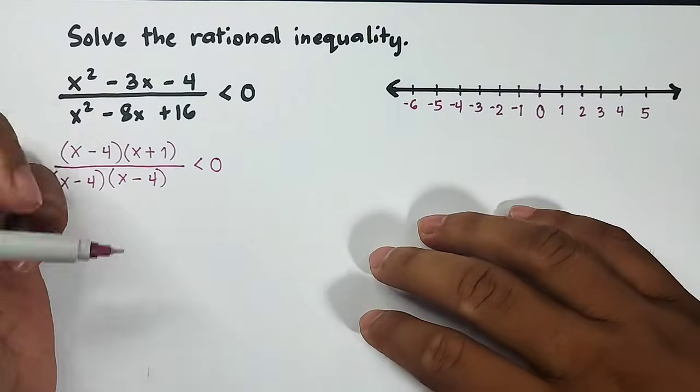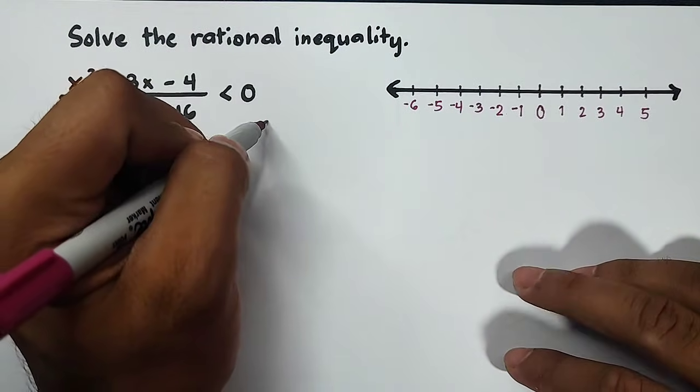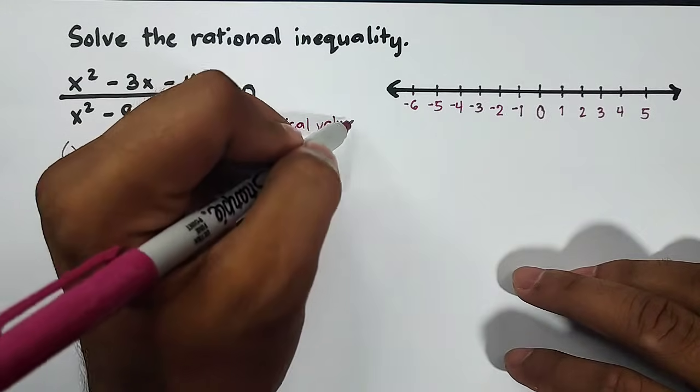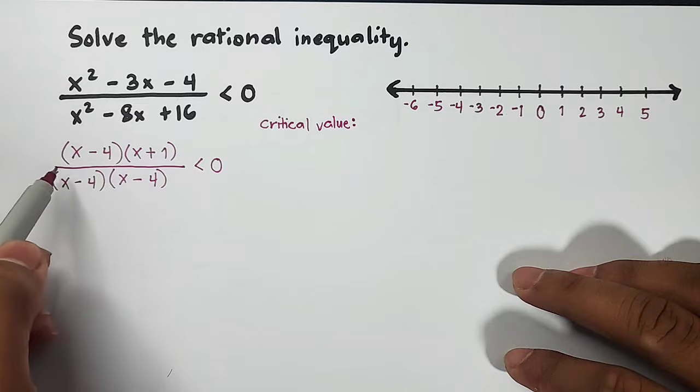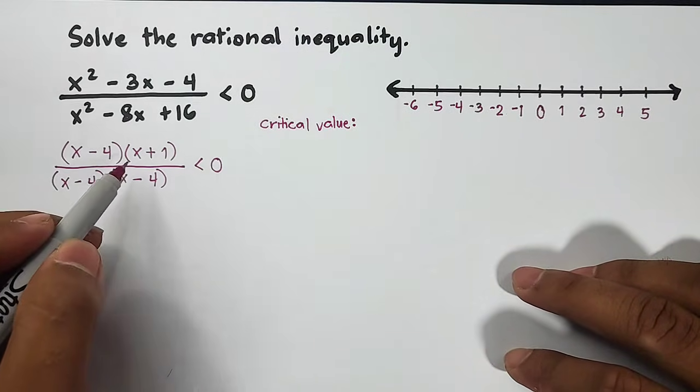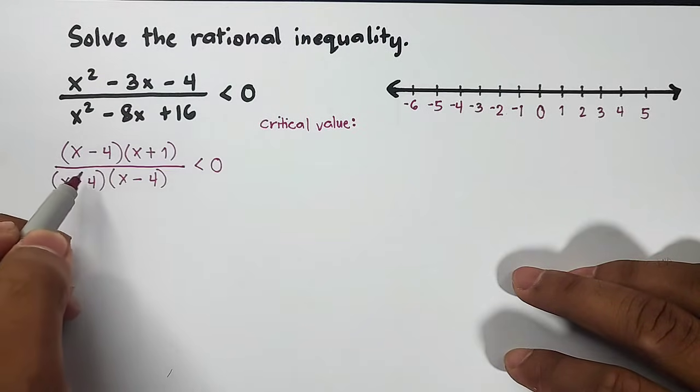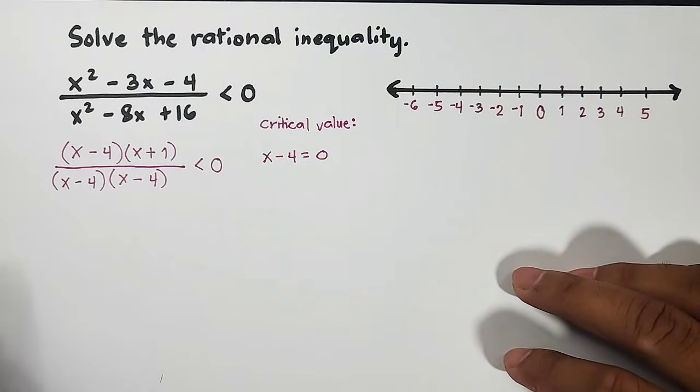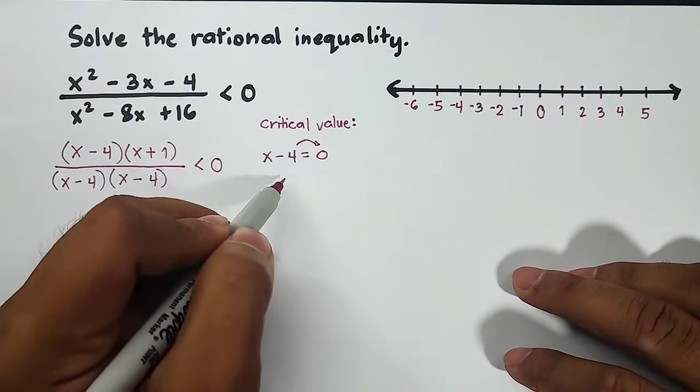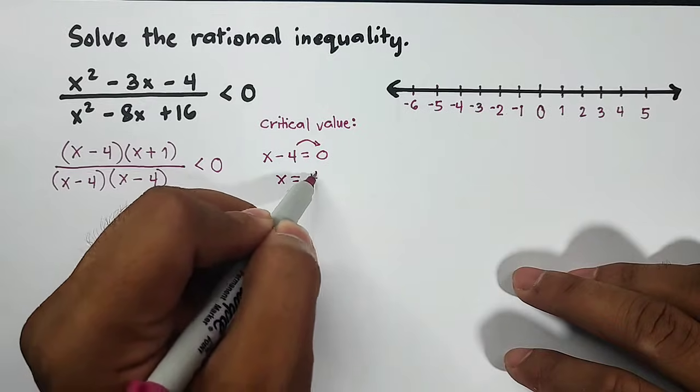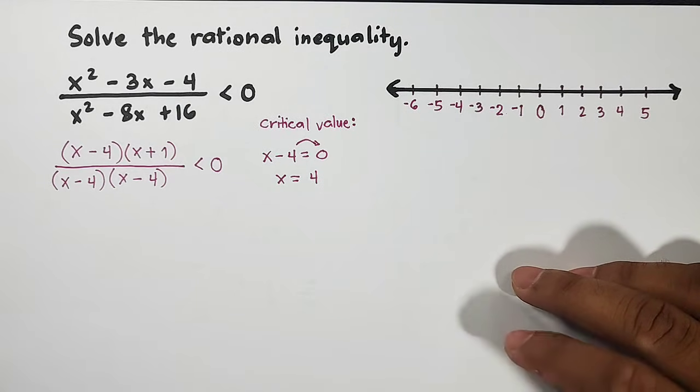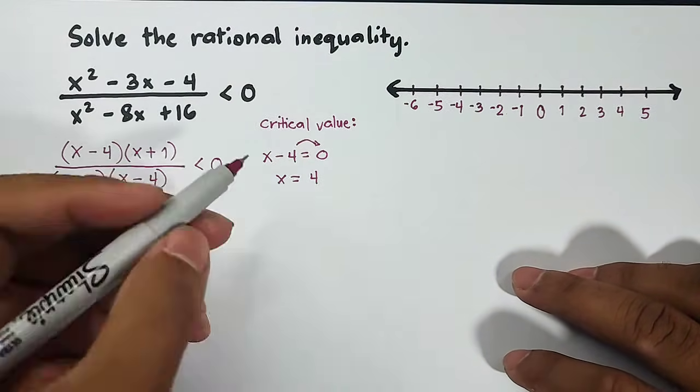Now to solve for the critical value... what you need to do is get the factors. We have x - 4 and x + 1. I will equate each factor. So x - 4, equate this by 0. Transpose this, it will become x = 4. Now the meaning of this—it's called the critical value because critical values are the zeros of your function. So we have x = 4.